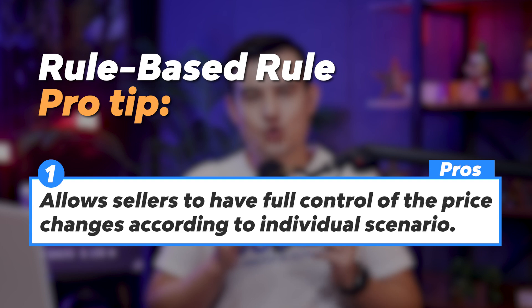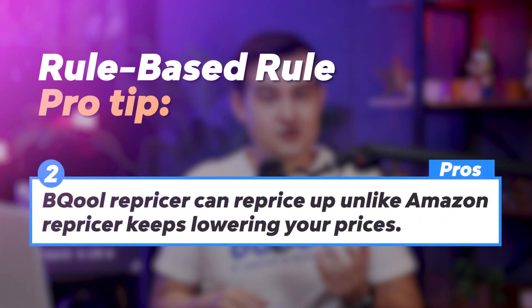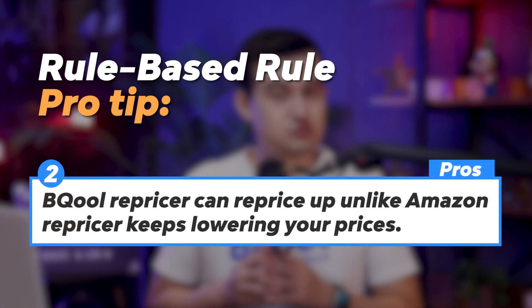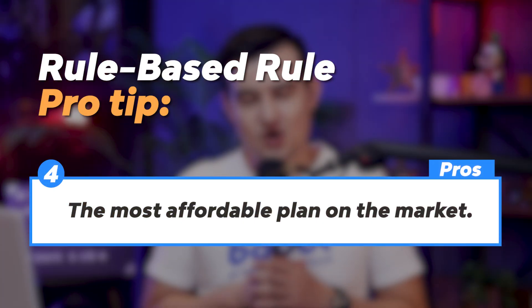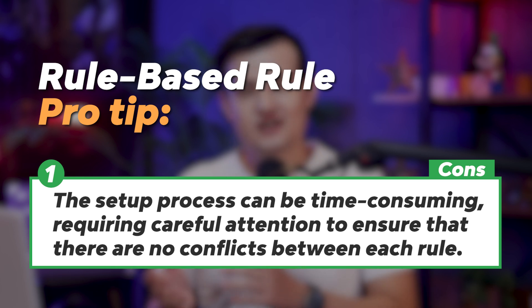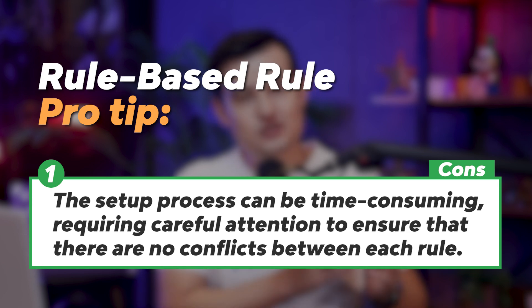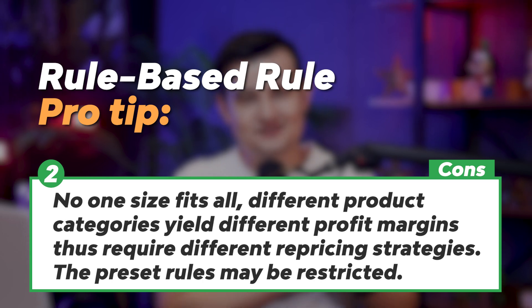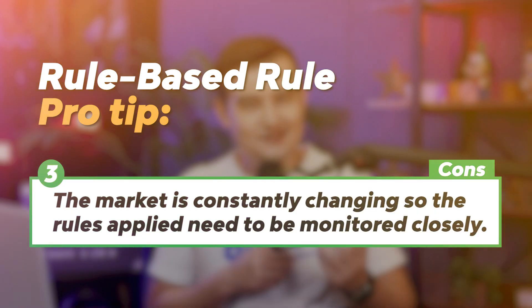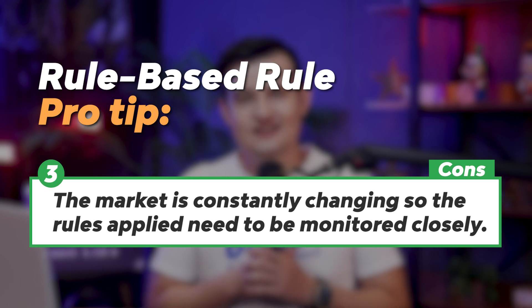Here are the pros and cons of rule-based rules. For the pros: it allows sellers to have full control of price changes according to each individual scenario; the BQ repricer can reprice up, unlike Amazon's repricer which keeps lowering your prices; it allows more flexibility to reprice for higher profit or more sales; and it is the most affordable plan on the market. For the cons: the setup process can be time-consuming, requiring careful attention to avoid conflicts between rules; there is no one-size-fits-all since different product categories require different repricing strategies; preset rules may be restrictive; and the market is constantly changing, so rules need to be monitored closely.